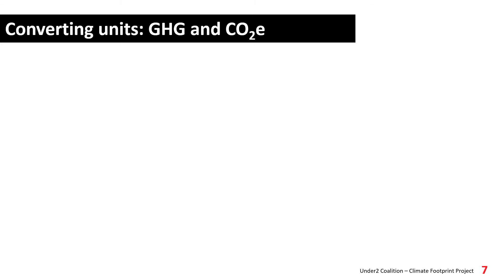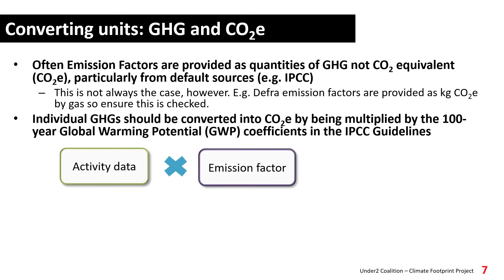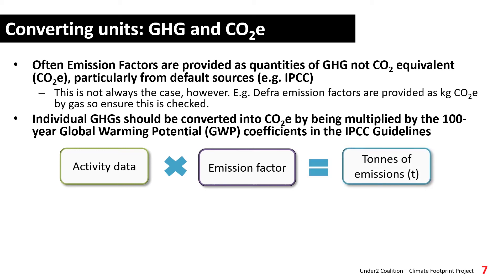At some point during compilation, you will want to convert your greenhouse gas emissions into carbon dioxide equivalents so they can be compared. First, you will calculate tons of emissions by multiplying your activity data by an emission factor. This is the simplest form of calculation and falls under the Tier 1 IPCC methodology. If you aren't familiar with Tier 1, 2, and 3 methodologies, please see our mini webinar on this subject.